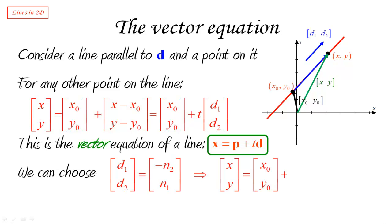And so, if I use that, then the vector equation will become x, y equal x0, y0, plus a multiple of minus n2, n1. Again, minus n2, n1 is still a direction vector, but it's a special one in the way it is constructed, it's obtained specifically from a normal vector.